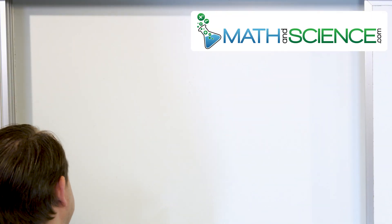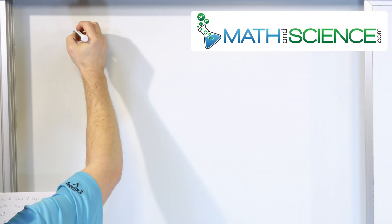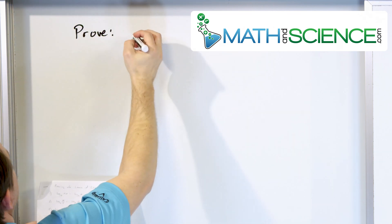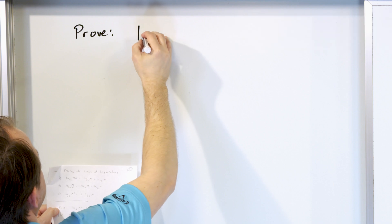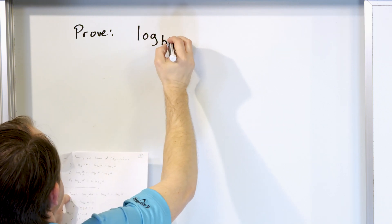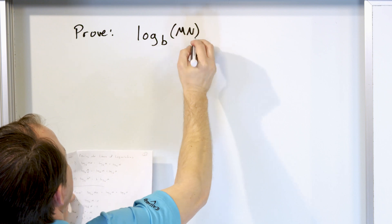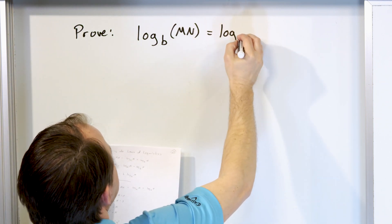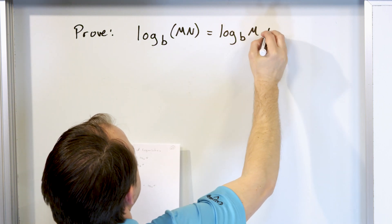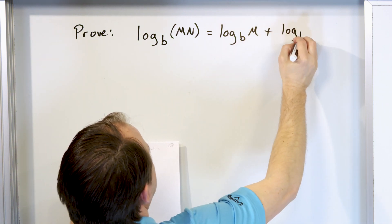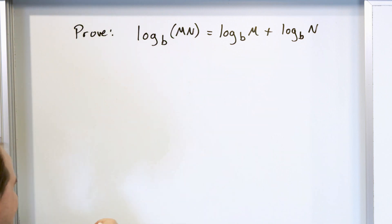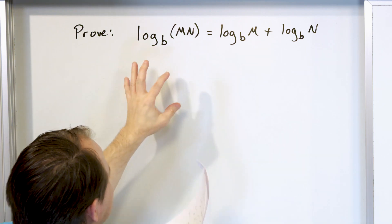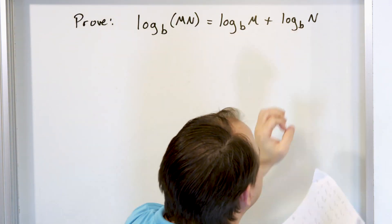We're going to prove three laws of logarithms. The first one is the product rule: the logarithm base b of the product m times n is the same thing as log base b of m plus log base b of n. So why is it that when you have two things multiplied and a logarithm operating on it, it becomes the addition of two logarithms?